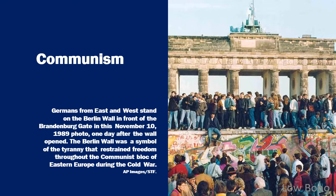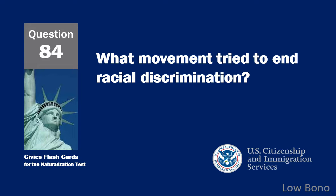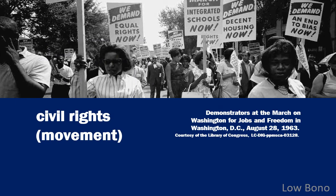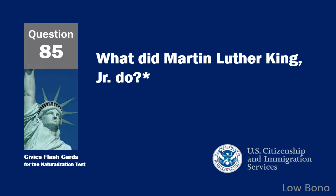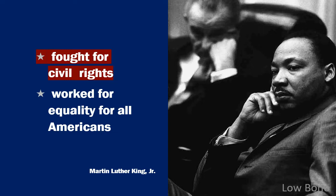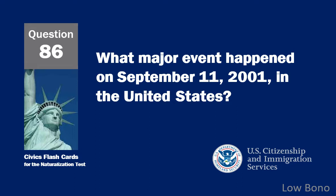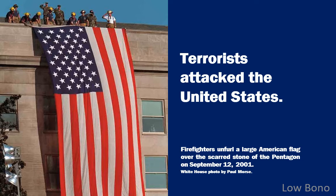What movement tried to end racial discrimination? Civil rights movement. What did Martin Luther King Jr. do? Fought for civil rights. What major event happened on September 11, 2001 in the United States? Terrorists attacked the United States.